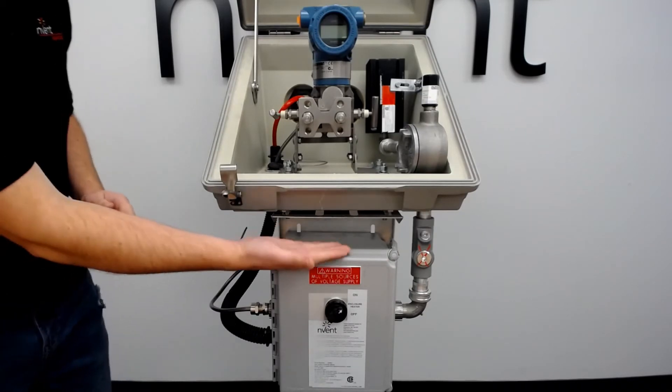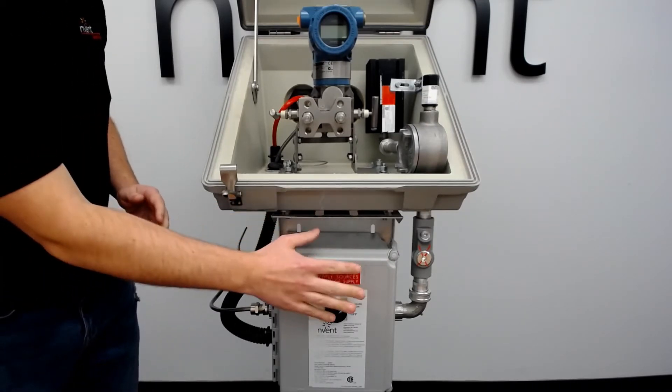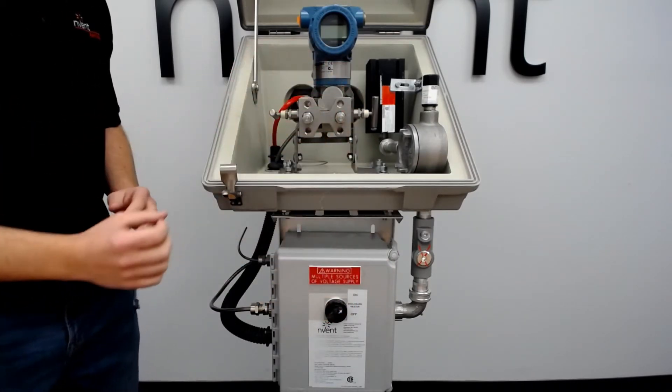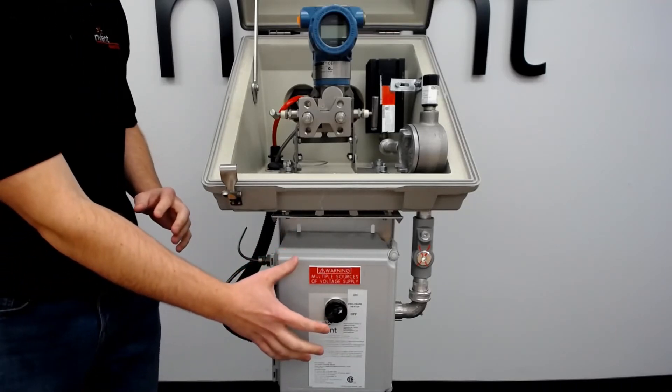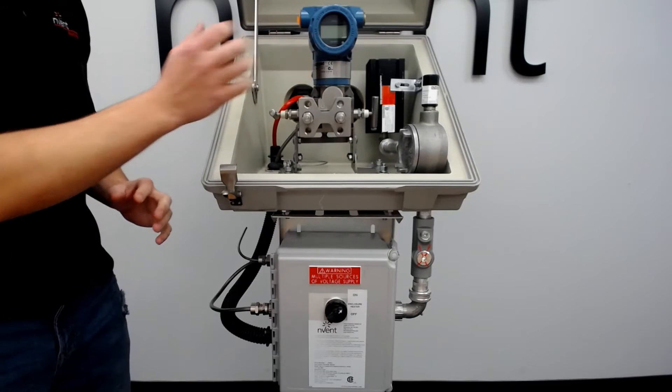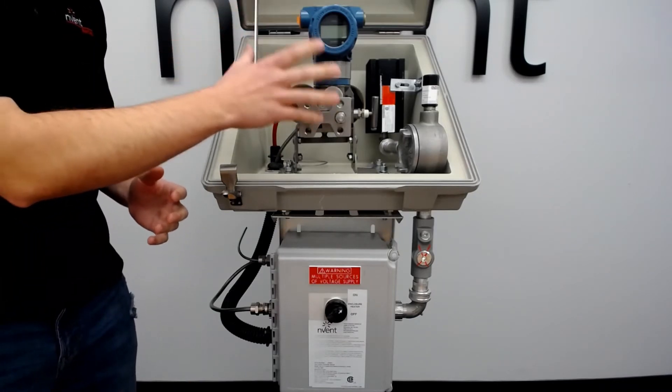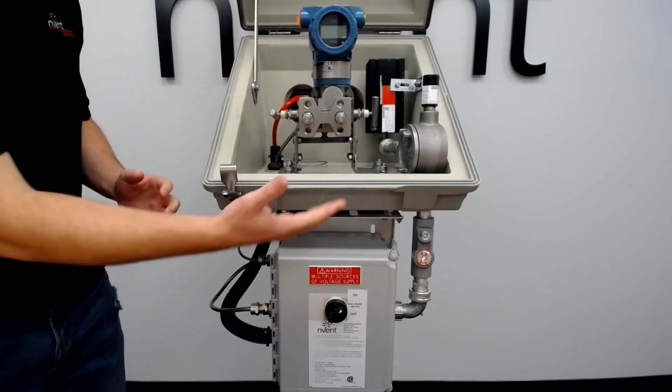As you can tell, there is physical separation between the junction box and the enclosure. That's because the junction box is typically a Div 2/Zone 2 rating, whereas the enclosure is usually more stringent and is Div 1 or Zone 1, so there has to be physical separation.